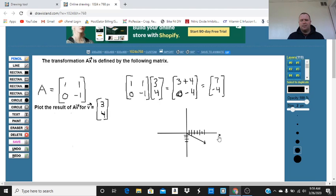Again, this would be the x, this is the y. So that's our result vector, and we've plotted our result vector after the transformation from matrix A. I hope that helps you guys, and thanks for watching. Bye.